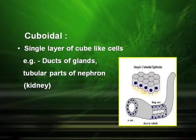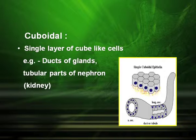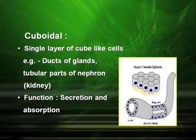The next type is the cuboidal epithelium. These cells are cuboidal in shape — a single layer of cube-like cells found in the ducts of glands and the tubular parts of the kidney, that is, in the nephrons. Their function is secretion and absorption.